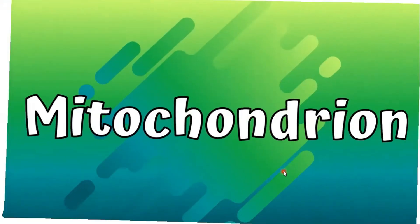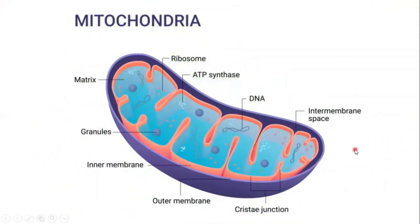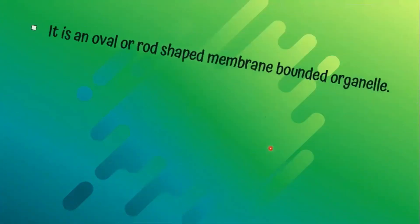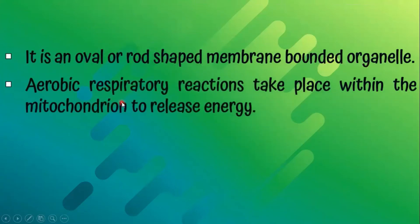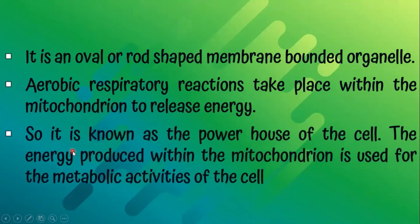Mitochondria. It is an oval or rod-shaped, membrane-bounded organelle. Aerobic respiratory reactions take place within the mitochondrion to release energy. It is known as the powerhouse of the cell, and the energy produced within the mitochondrion is used for the metabolic activities of the cell.